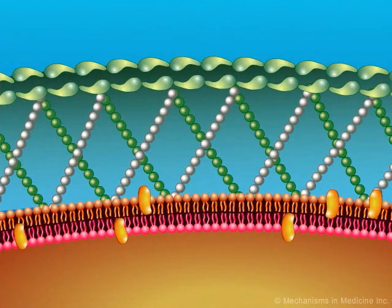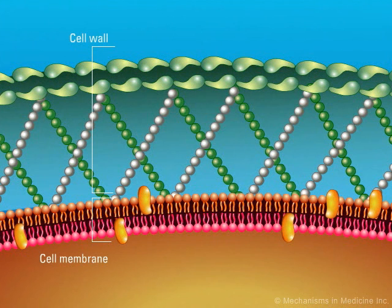The cell membrane of fungi is similar to that of other eukaryotic cells and is composed of a lipid bilayer with proteins embedded within it. A major component of the fungal cell membrane is the presence of sterols, which are virtually absent from all prokaryotes, including bacteria.